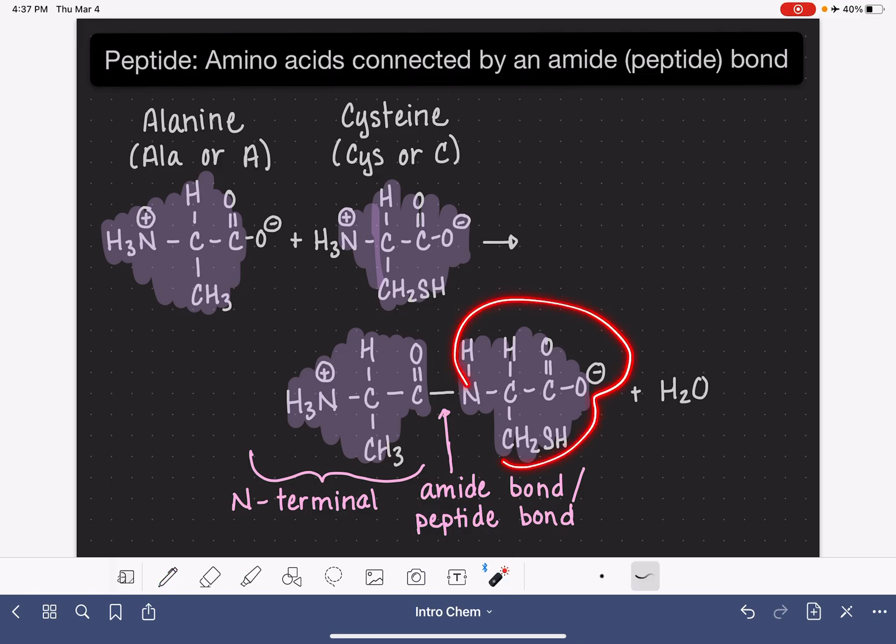The other end has the carboxylic acid group, the COO- portion. That end of the peptide is referred to as the C-terminal, the end of the peptide with the carbon-oxygen double bond group.